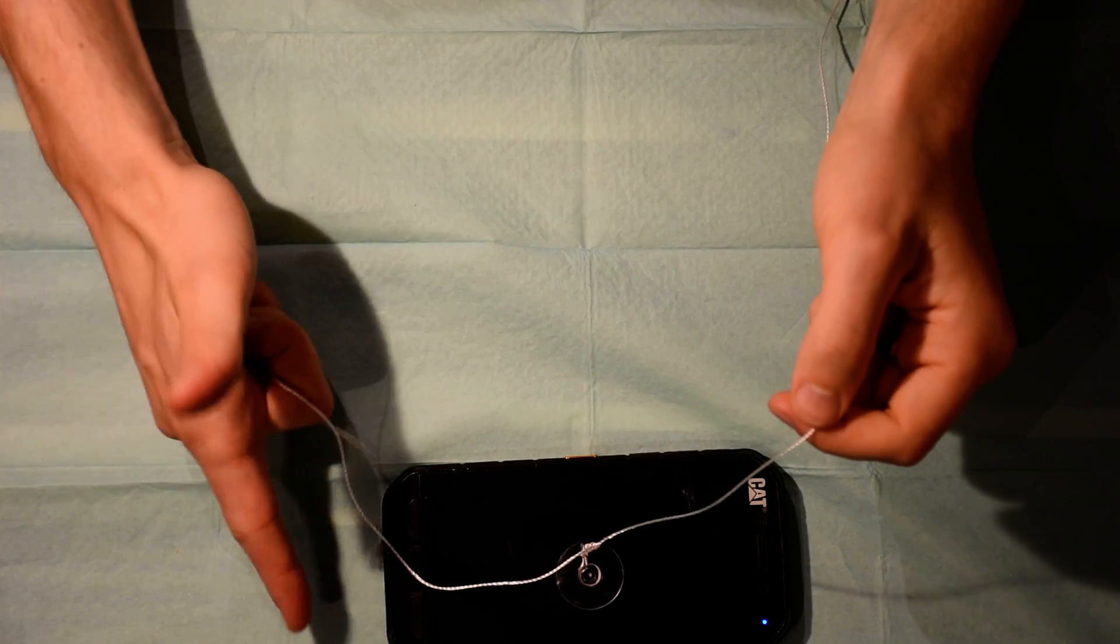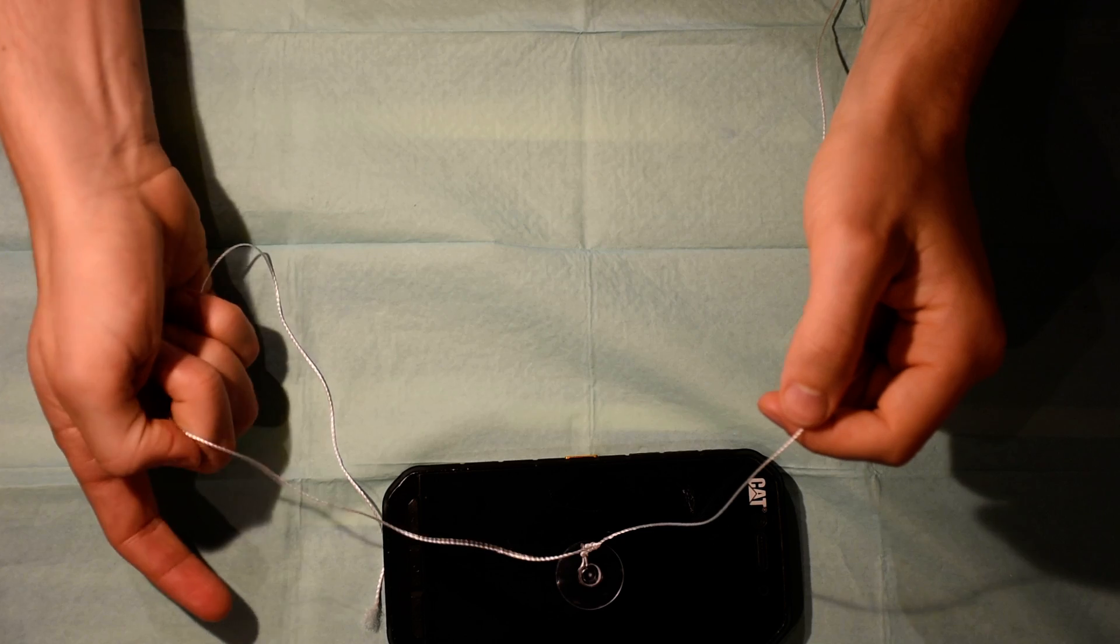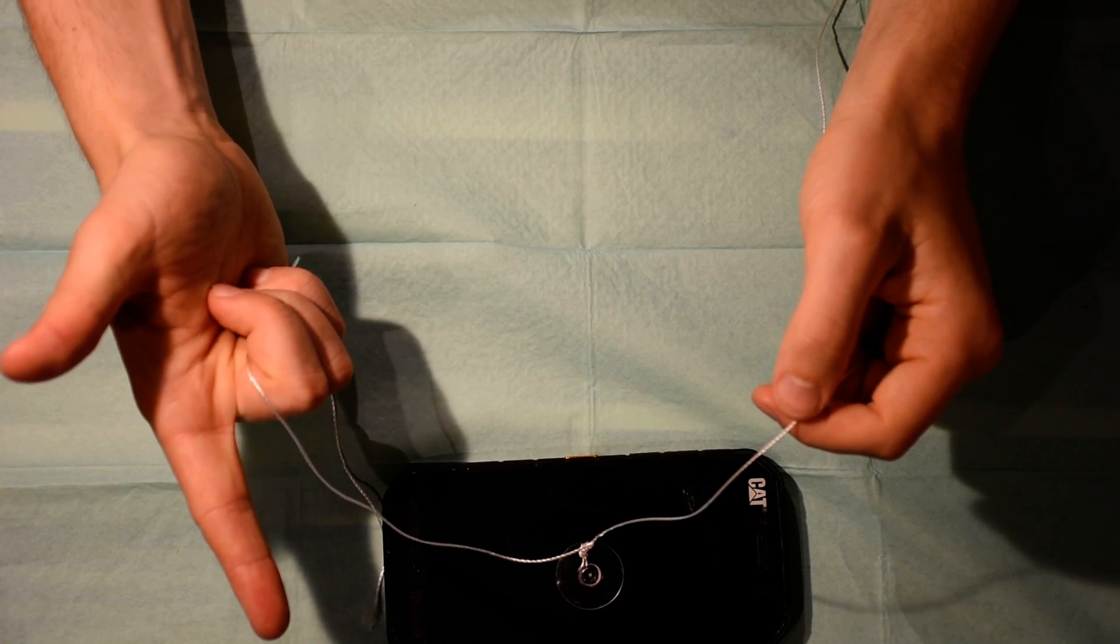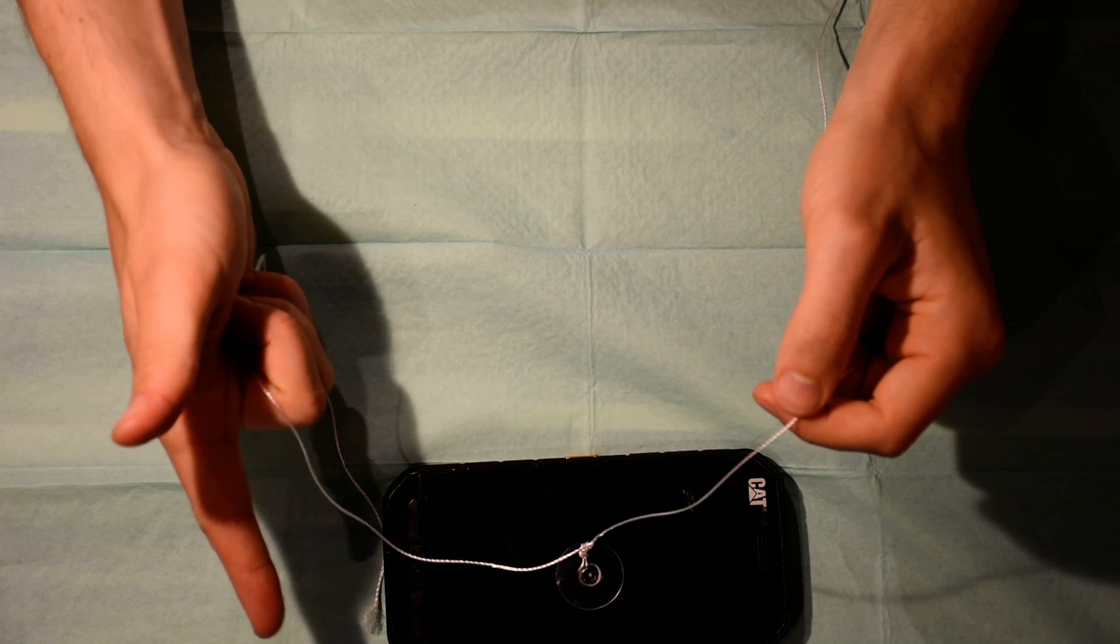You start off with a gun position like this. Take the cord in your three fingers here while presenting your index finger and thumb.